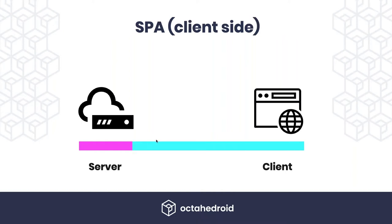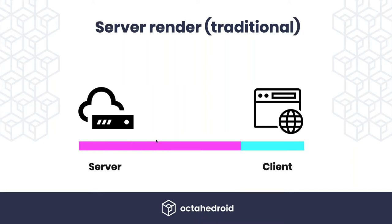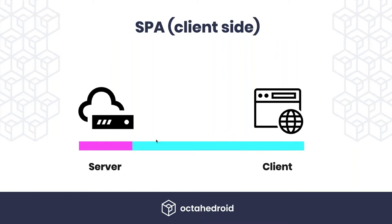Then, maybe four or five years ago, something called SPAs or single page applications showed up. The difference using SPA versus the traditional monolithic server-side rendering approach is that your visitor's browser goes to your server, and the server only returns a JSON representation of the data. The client — the browser or mobile phone — takes care of doing most of the processing, rendering the data and turning it into pages. Most of the templating systems are running client-side.